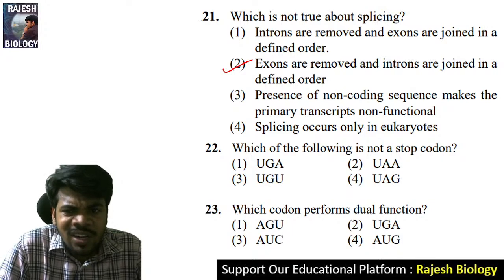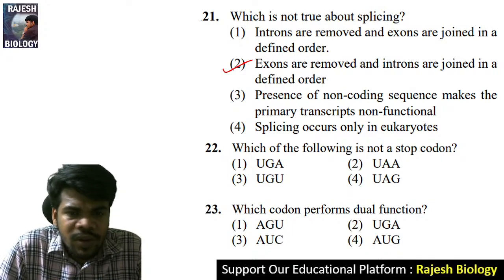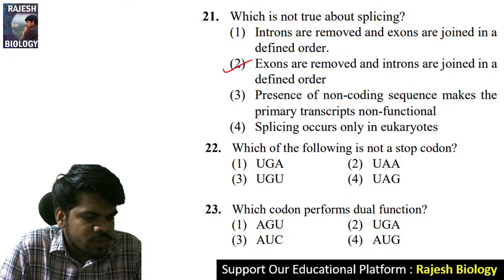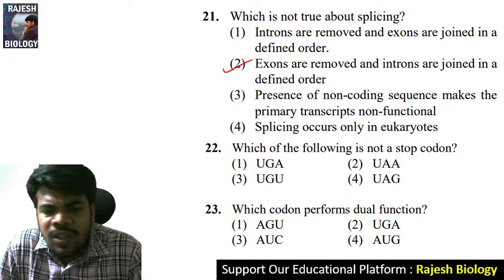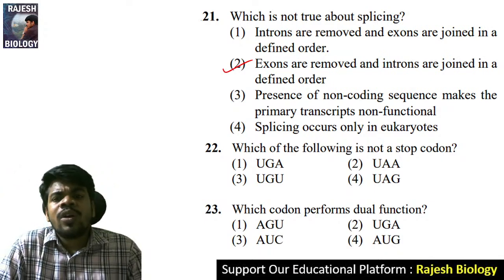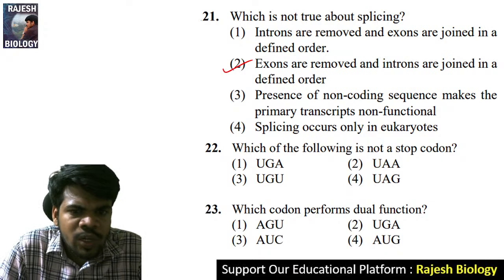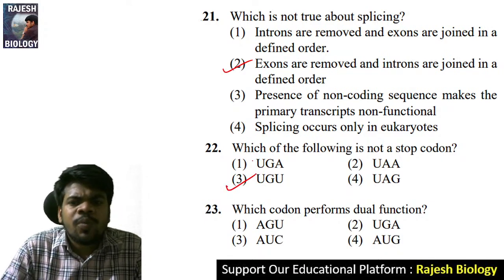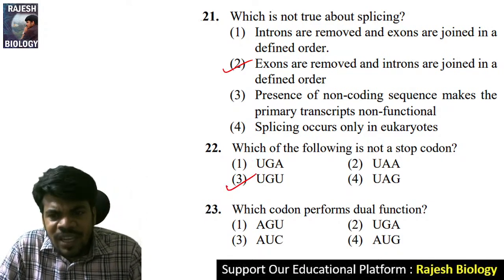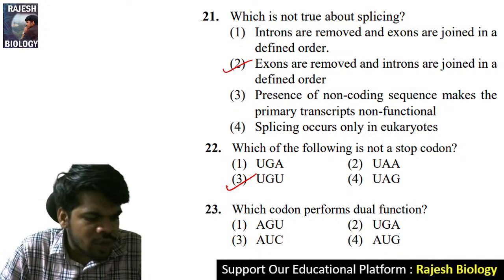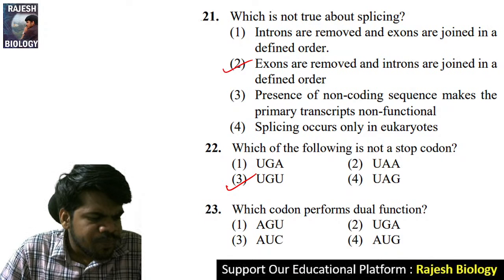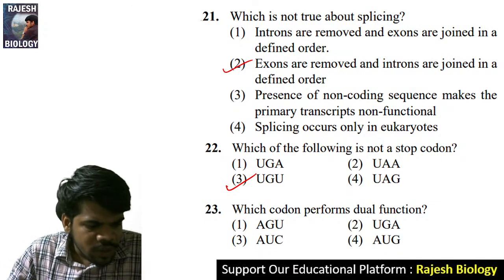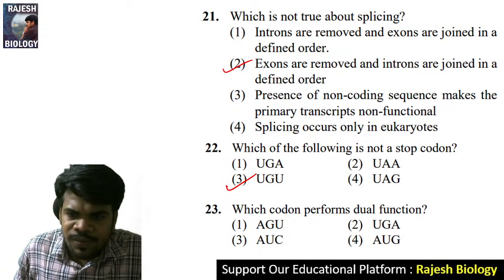Question 22: which of the following is not a stop codon? There are three stop codons. UGA, UAA, and UAG are the stop codons. UGU is not a stop codon — that is the right answer. Jnaneshwari, you are right. Question 23: which codon performs a dual function? AUG — it works both as a start codon and codes for methionine.